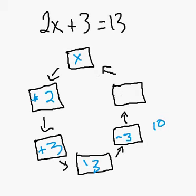Instead of multiplying by 2, I'm going to divide by 2. And 10 divided by 2 is 5. So x, my friends, equals 5.